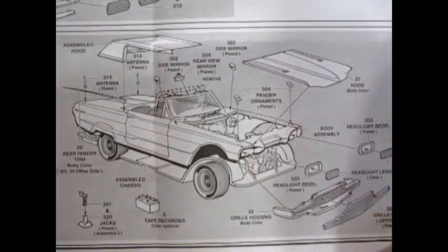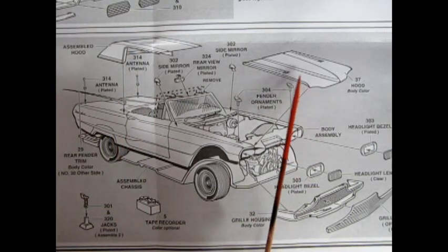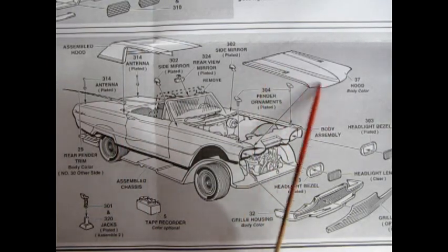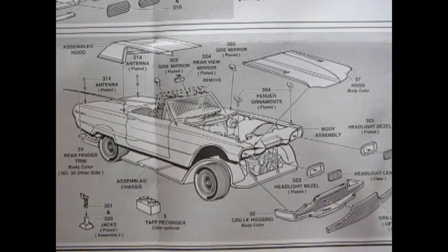We have the body going together. So you get a custom hood here with the point that goes all the way to the front. The grill housing. The optional grill insert. If you want chrome in there. There are two rectangular headlights and the rectangular headlight panels.